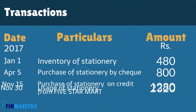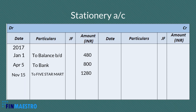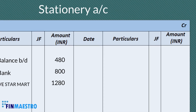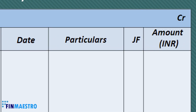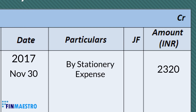On November 30, we consumed stationery worth Rs. 2,320. When we consume inventory, what happens to the ledger balance? Yes, it reduces. So which side should we record this? Yes, that's right — on the credit side. So let's write 'By Stationery Expenses', Rs. 2,320.